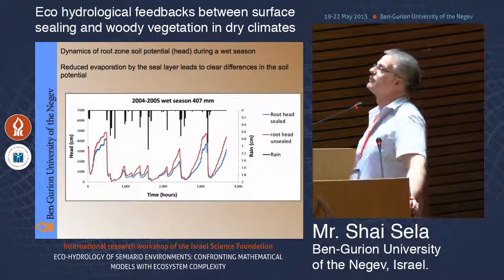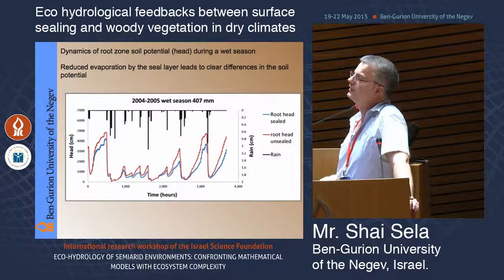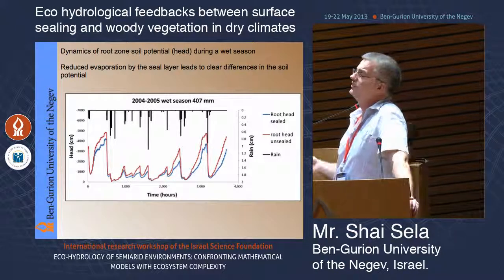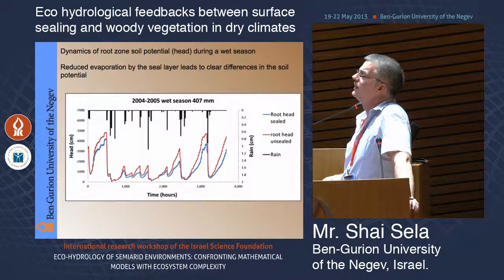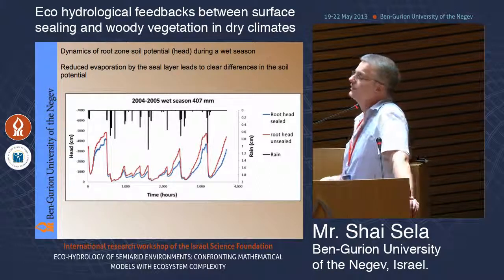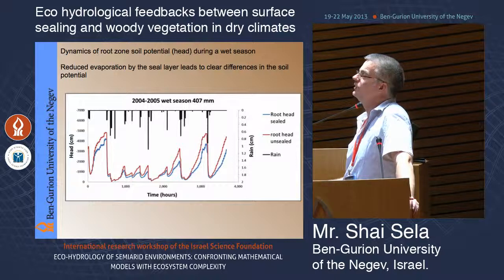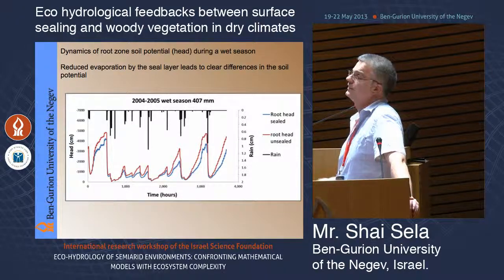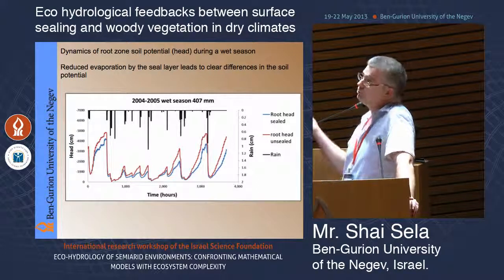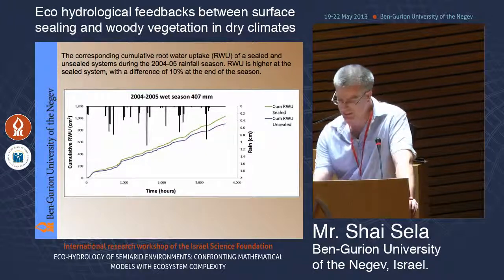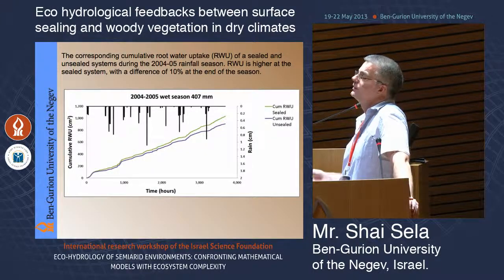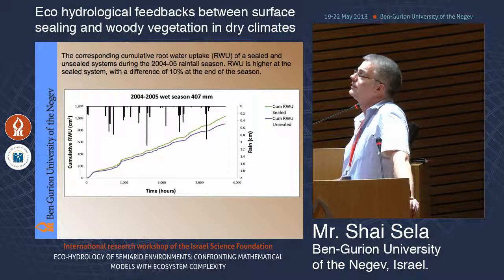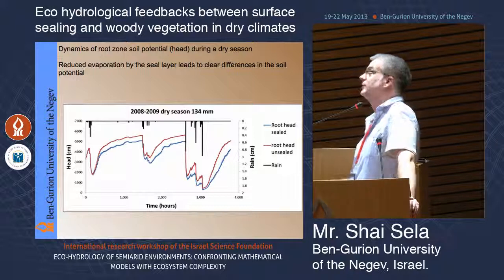Here are some results. On the y-axis is root zone potential — the potential of the soil where the roots are located. On the x-axis is time progressing through the season. Red is the unsealed system; blue is the sealed system. Every time there is a drying period, there is a marked difference in soil potential between the two systems. This is a wet season — wetter than average at 407 millimeters. Looking at the corresponding root water uptake of the simulated shrub, there is close to 10% difference by the end of the season. For a drier than average season, these differences are much larger — much longer drying periods give more time for the sealer to suppress evaporation.